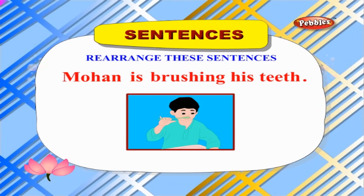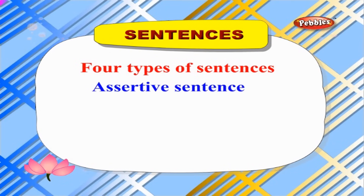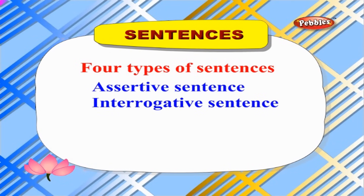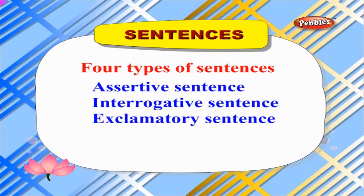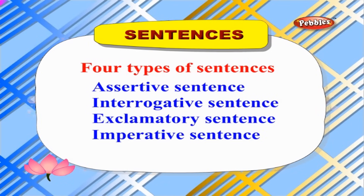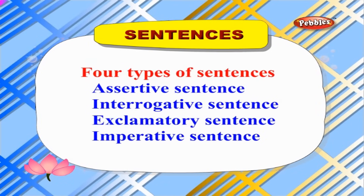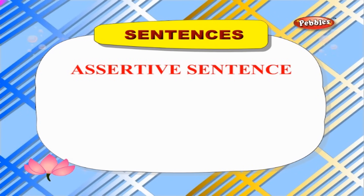'Mohan his brushing teeth is' — let us correct the sentence: 'Mohan is brushing his teeth.' There are four types of sentences: assertive sentence, interrogative sentence, exclamatory sentence, and imperative sentence.